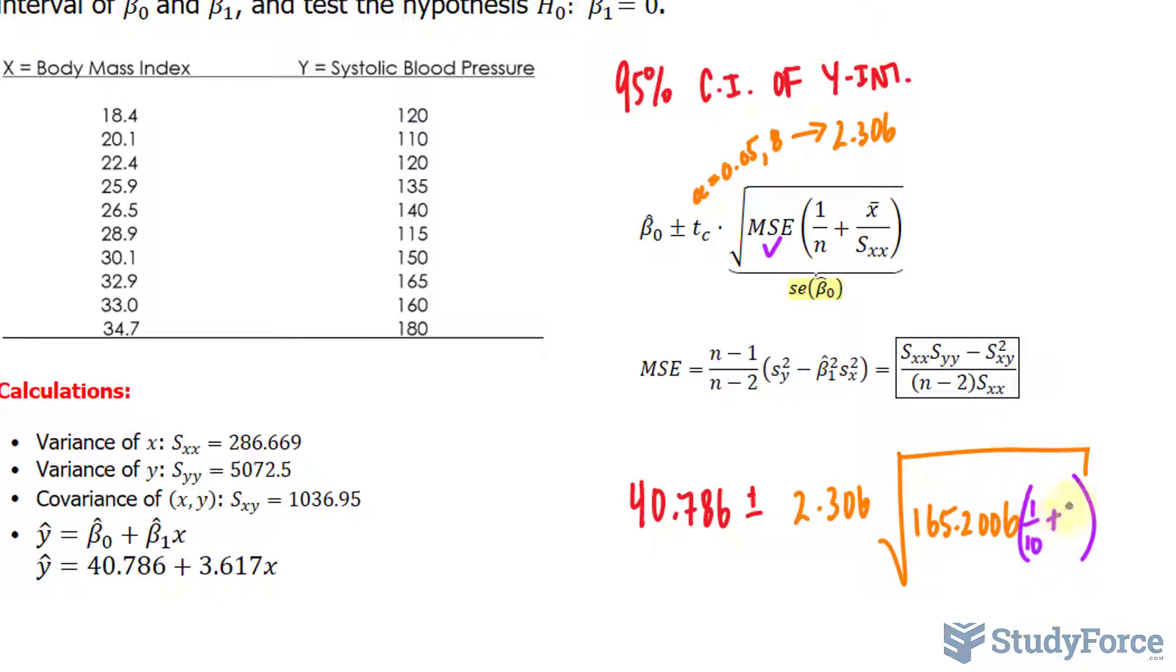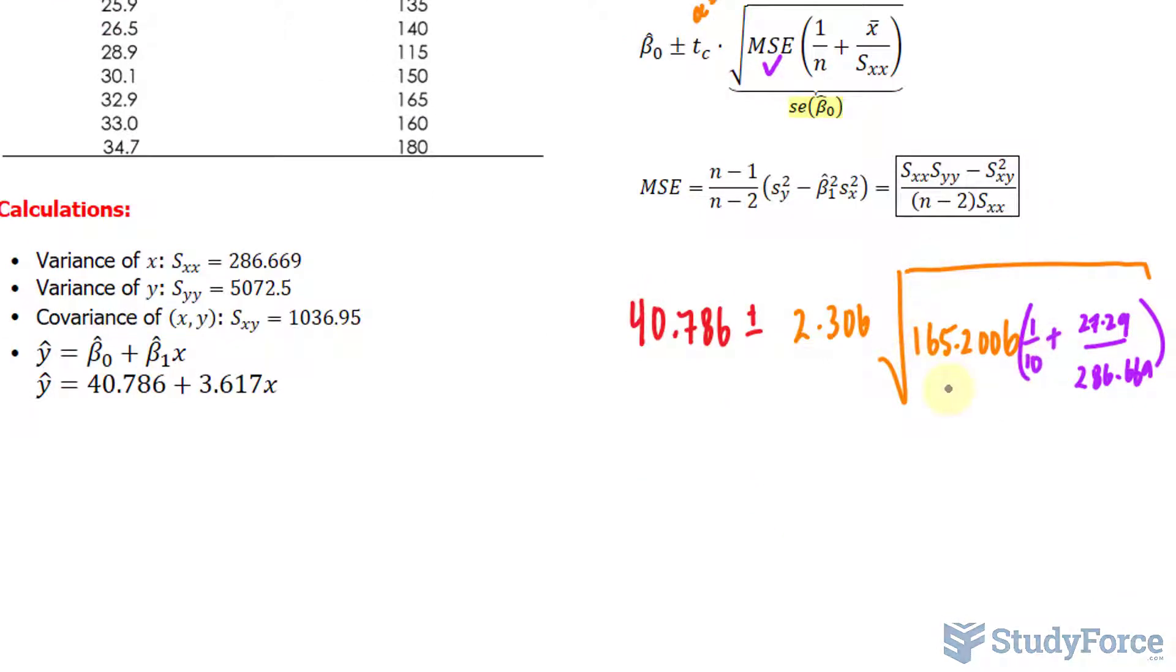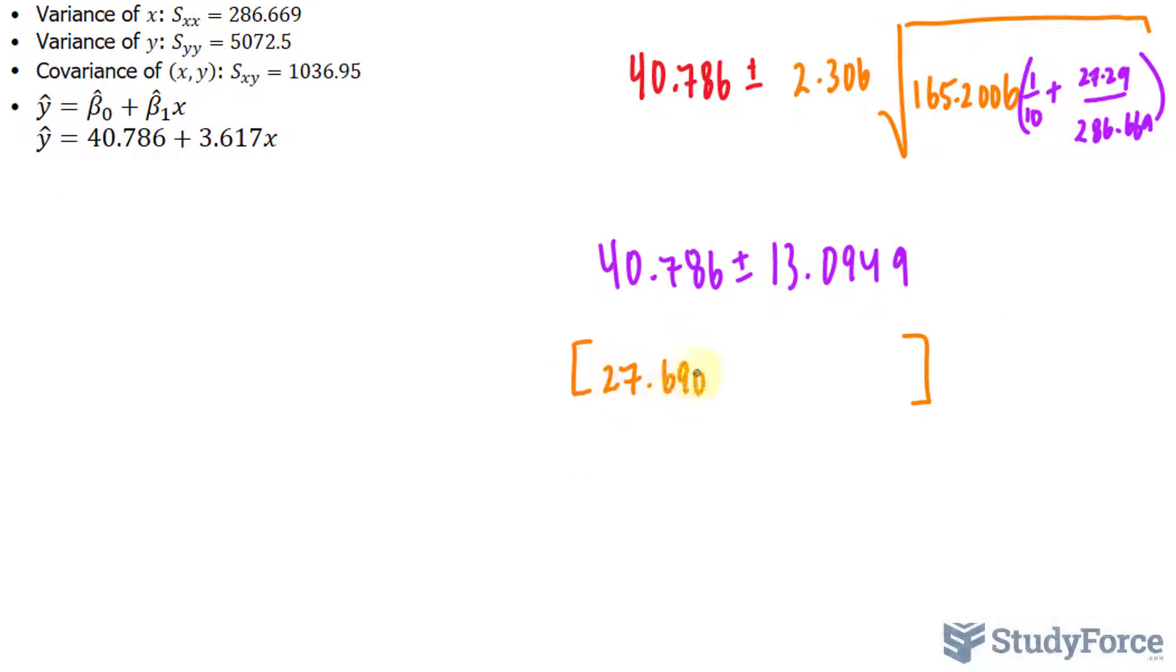Now we calculate what's in the parenthesis, so I have 1 over 10 plus the mean of our data. It's not found here but it is 27.29 over the variance of the x factor which is 286.669. Now we can go ahead and find out the answer to this square root, multiply it to 2.306, and then add and subtract it to 40.786. You should end up with 13.0949. Your confidence interval is between 27.6907 and 53.8805.